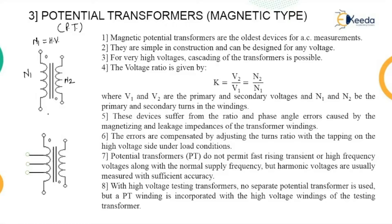The number of turns on the secondary are low, which is generally the low voltage terminal. Magnetic potential transformers are the oldest devices used for the purpose of AC measurement. They are simple in construction and can be designed for any voltage. To achieve measurement of any voltage, cascading of the transformer is done.